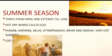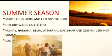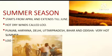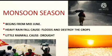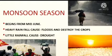Summer in India starts from April and extends till June. Hot dry winds called loo and dust storms are also common during this time of the year. The states of Punjab, Haryana, Delhi, Uttar Pradesh, Bihar, and Odisha experience intense summer.